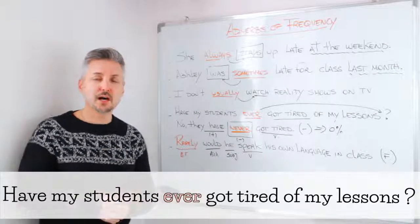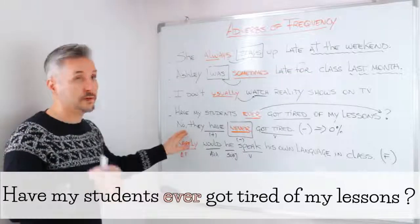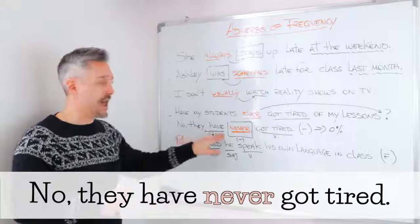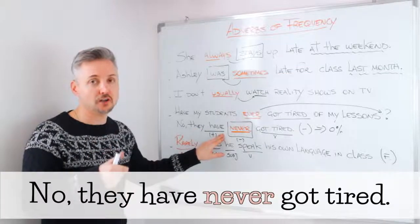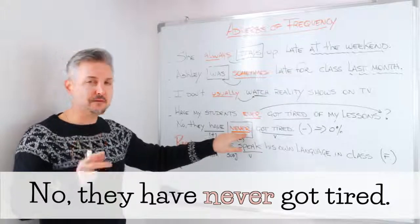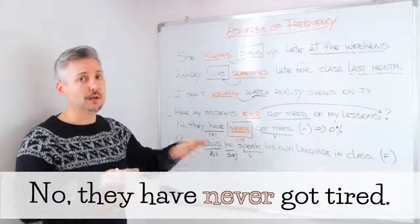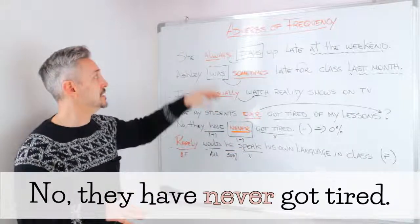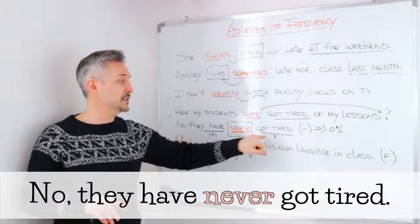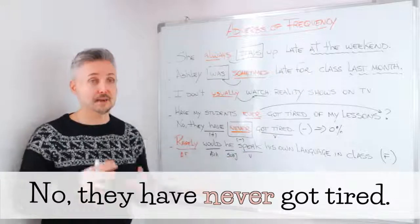If we wanted to answer that question with "no," we say: "They have never got tired." We use "never" rather than a negative auxiliary here, because we need an adverb. "Never" is 0% — the opposite of "always" — and "get tired" remains the main verb.